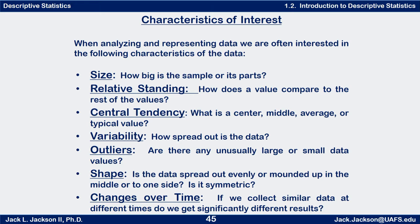Next we have what we call measures of relative standing. Relative standing basically measures the question: how does a value compare to the rest of the values? Measures of relative standing would be things like: what is the lowest value, what is the highest value — those are called the minimum and the maximum. Or what's the value in the middle so that half the values are below it and half above it? Or a measure where 80% is below it. Those would be measures of relative standing.